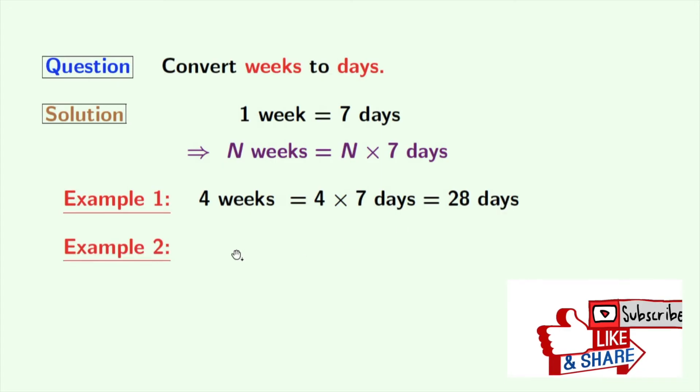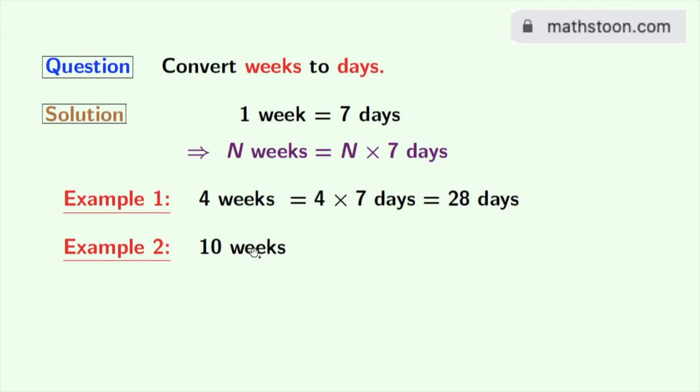Now we will consider another example, which is 10 weeks. Using this rule, 10 weeks can be written as 10 times 7 days, which is equal to 70 days.